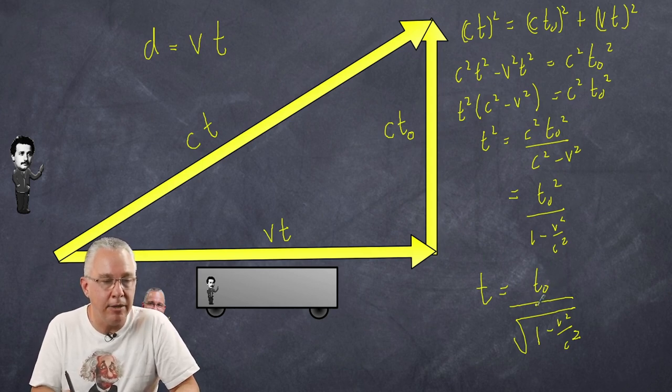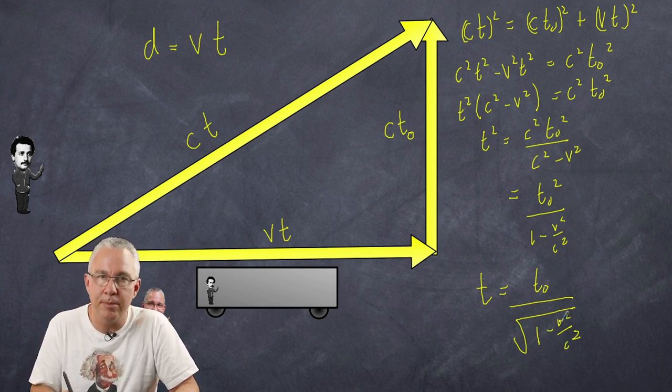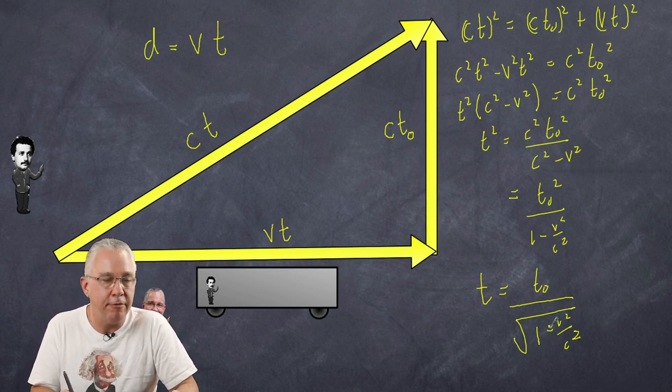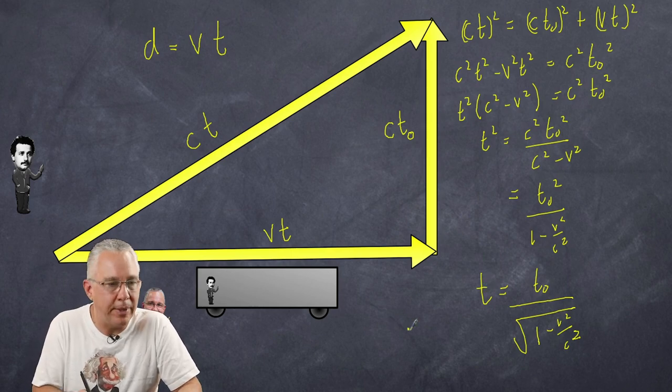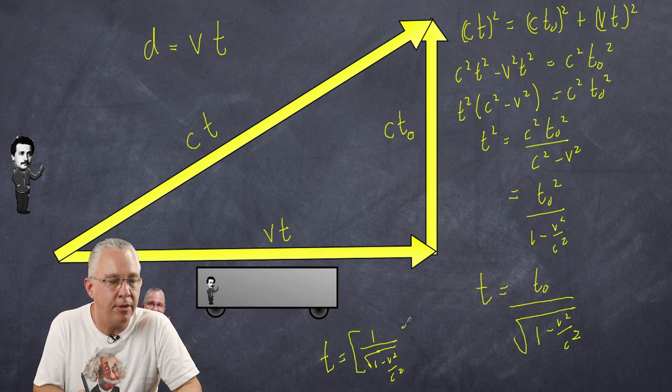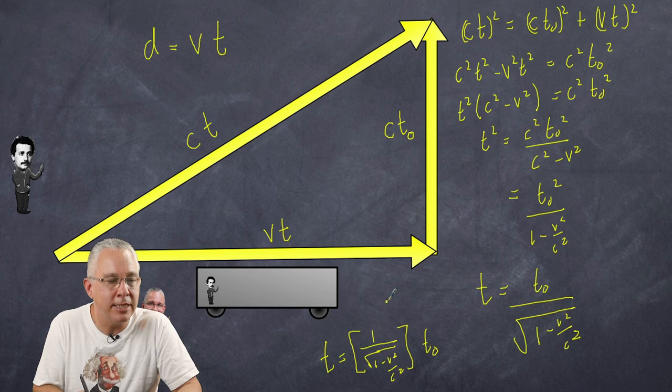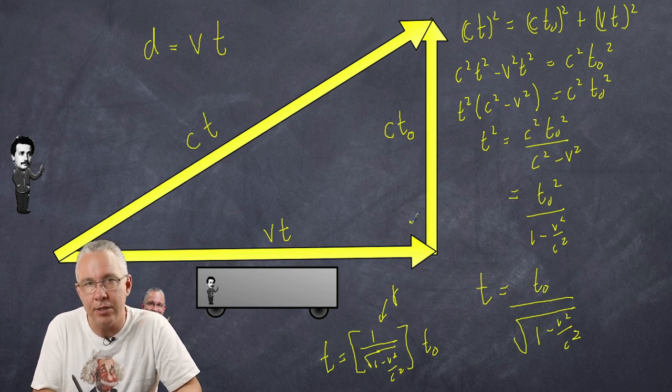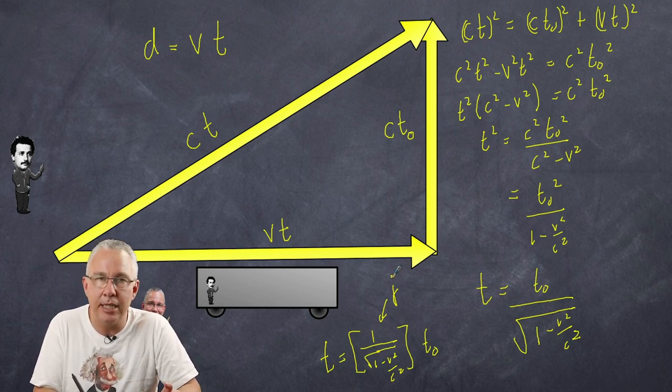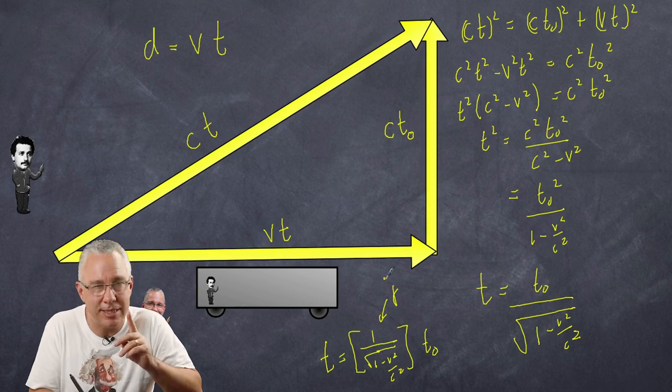So you can see now that this variable down the bottom here determines the dilated time. The proper time will be one value but this number down here will always be a number smaller than one and therefore t will be greater. Or another way we can say this is that t is equal to some function of 1 over the square root of 1 minus v squared over c squared multiplied by t0. Now this thing here is called the gamma constant and it's going to come up a few times when we look at relativity both in terms of momentum dilation and also length contraction. And it ties in with a concept called the Lorentz transformation but that's the subject of another video.